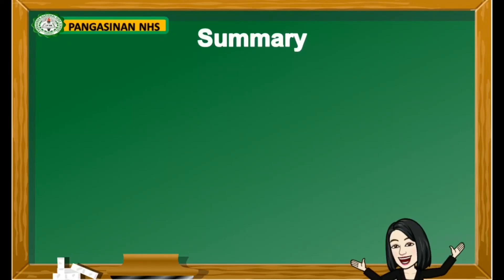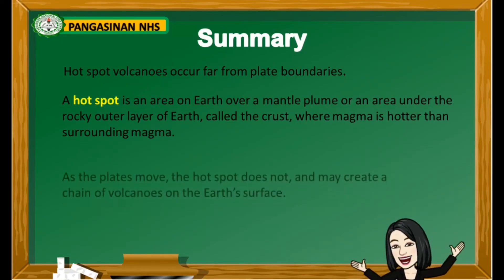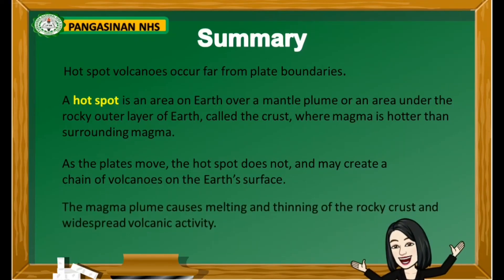To summarize what you have learned: hotspot volcanoes occur far from plate boundaries. A hotspot is an area on earth over a mantle plume, or an area under the rocky outer layer of earth called the crust, where magma is hotter than surrounding magma. As the plates move, the hotspot does not, and may create a chain of volcanoes on the earth's surface. The magma plume causes melting and thinning of the rocky crust and widespread volcanic activity.